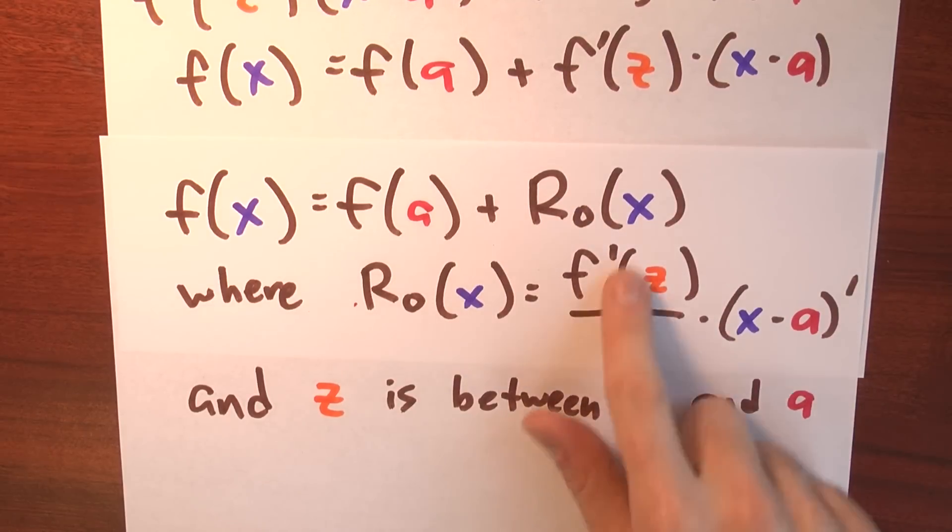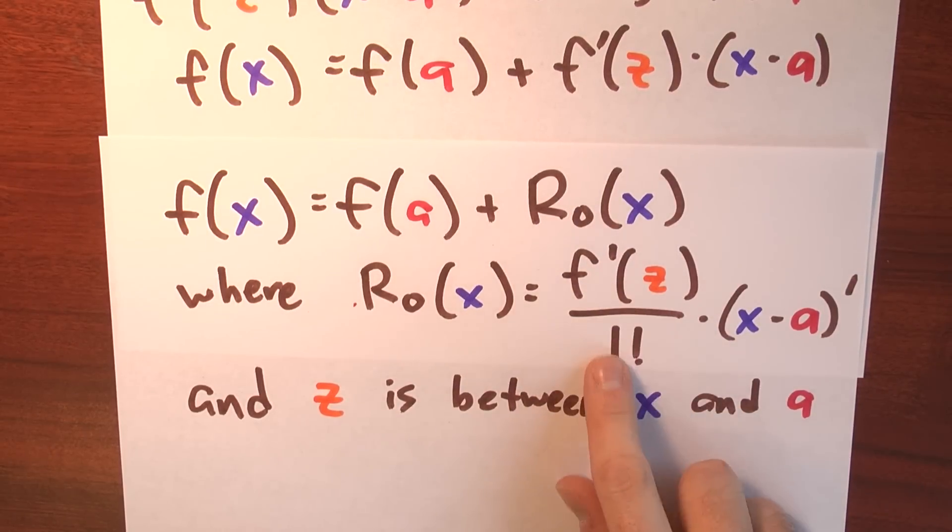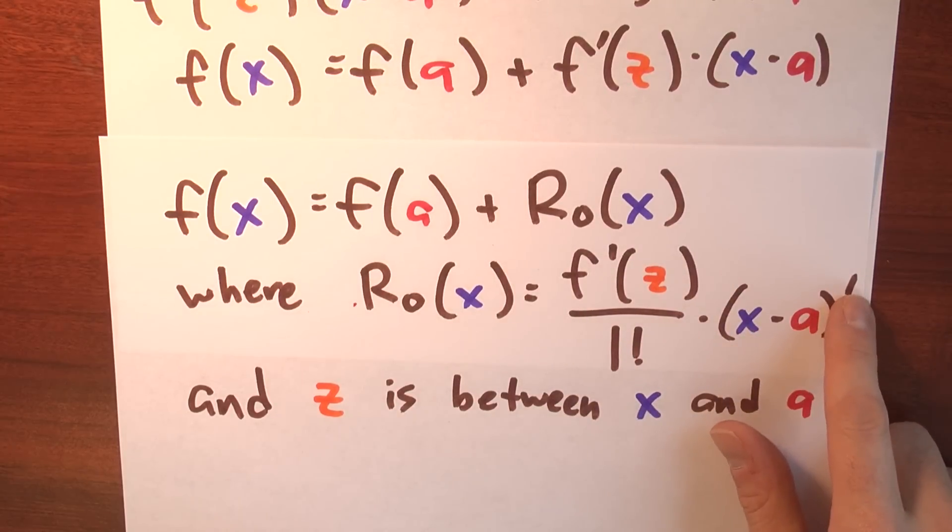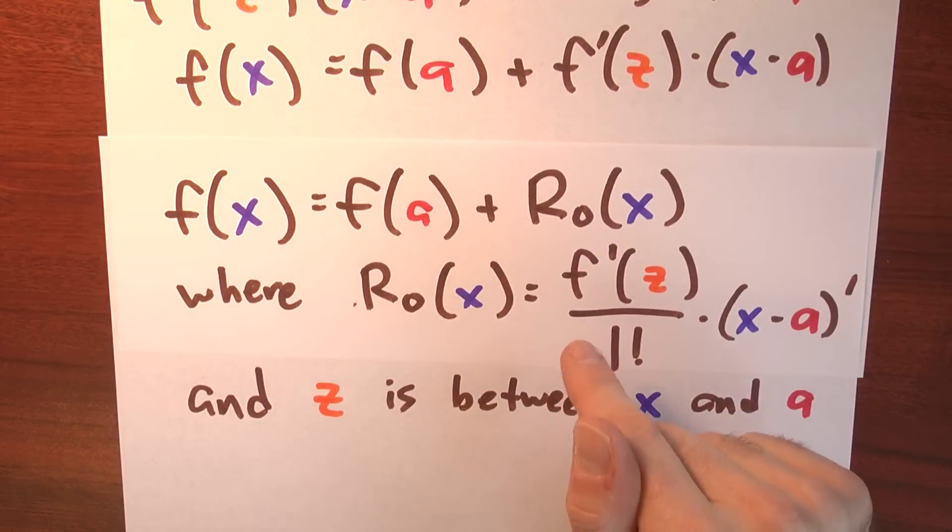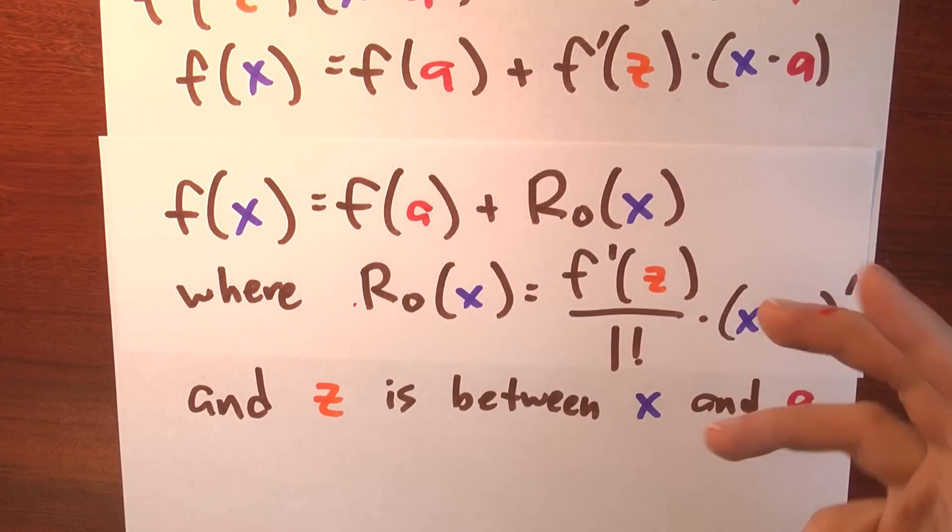where r sub 0 of x is this. The derivative of f at some point z between x and a, divided by 1 factorial, which is just 1, times x minus a to the first power. But when I write it like this, it looks exactly like an instance of Taylor's theorem.